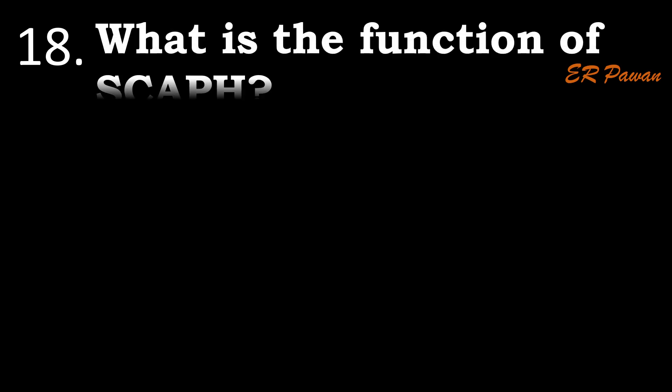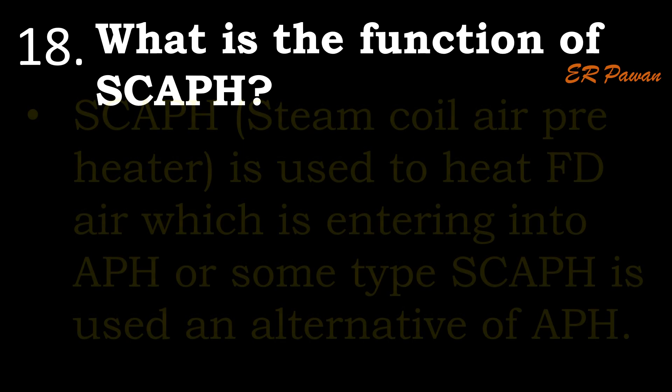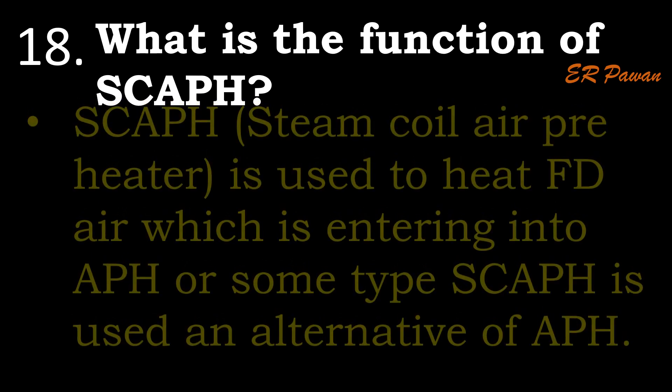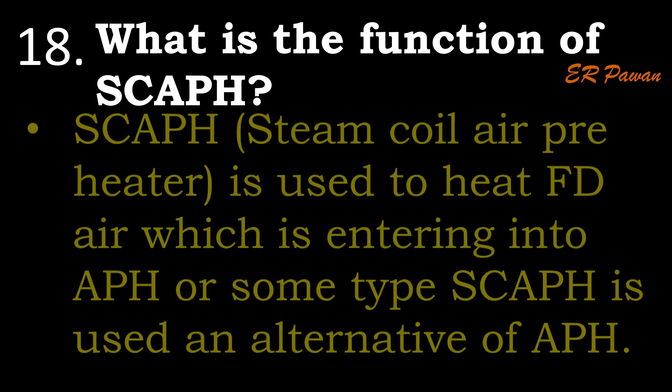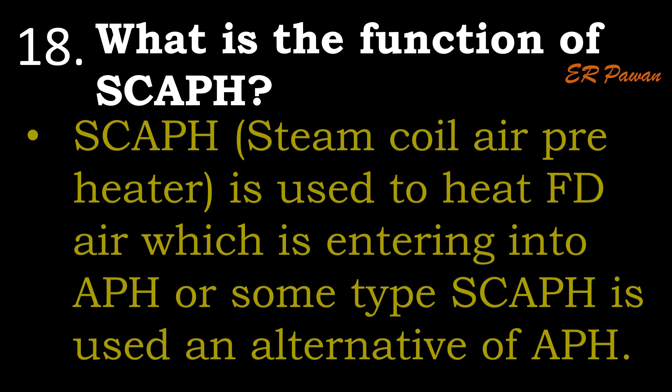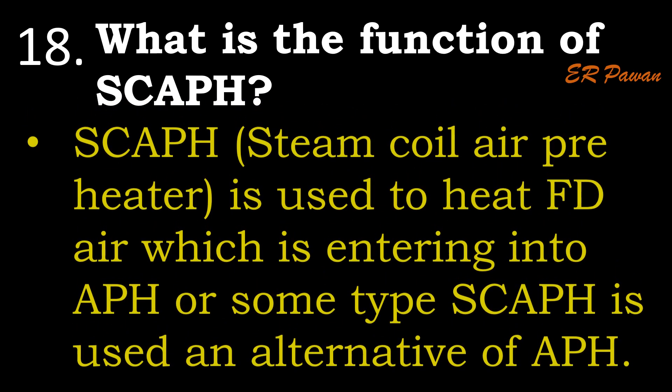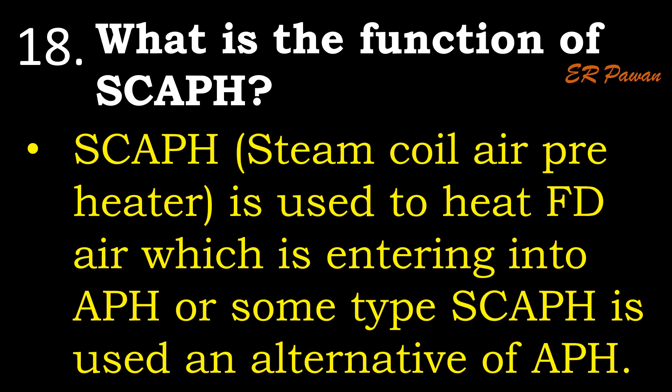Question 18: What is the function of the steam coil air preheater? The steam coil air preheater is used to heat forced draft air entering into the air preheater, or in some types it is used as an alternative to the air preheater.